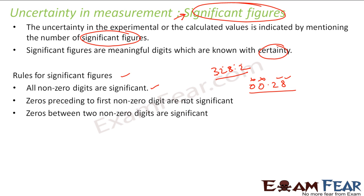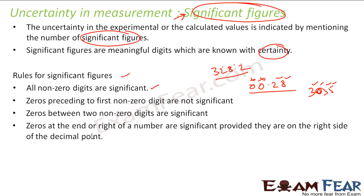Rule 3: Zeros between two non-zero digits are significant. For example, 3.035 — the zero between 3 and 35 is also part of the significant figures. Rule 4: Zeros at the end of a number are significant, provided they are on the right side of a decimal point.